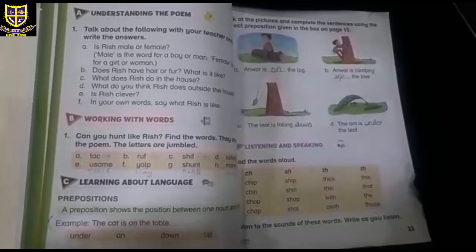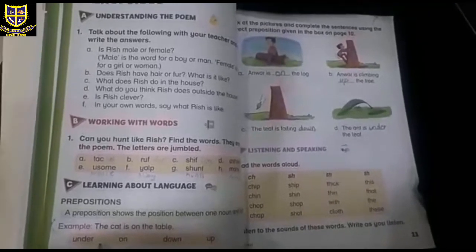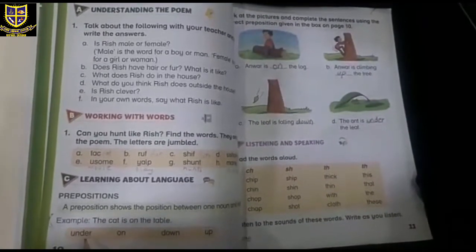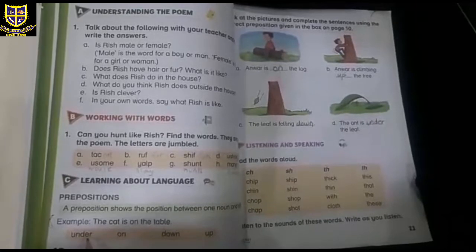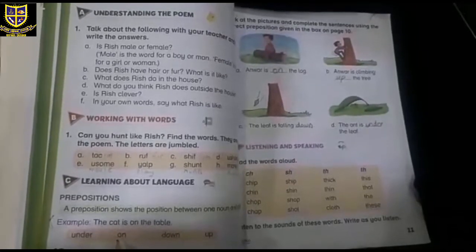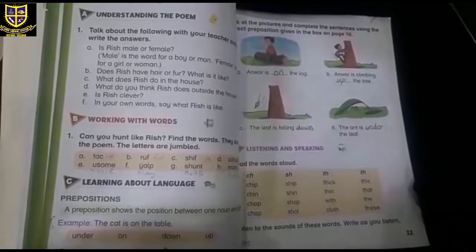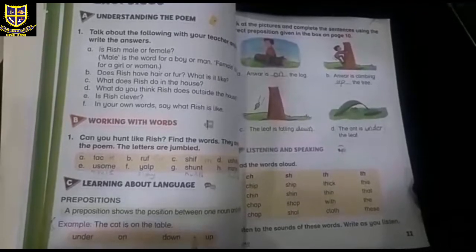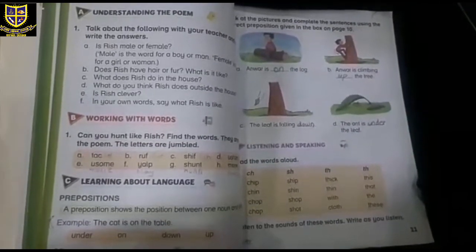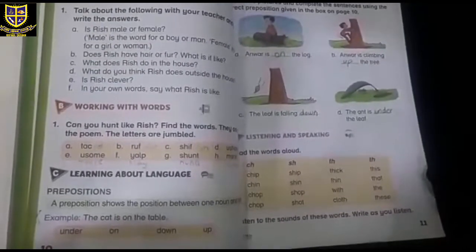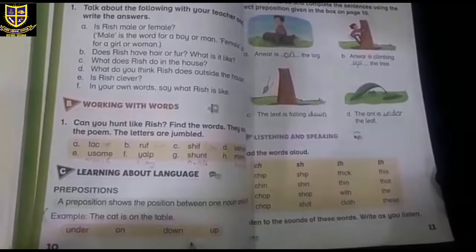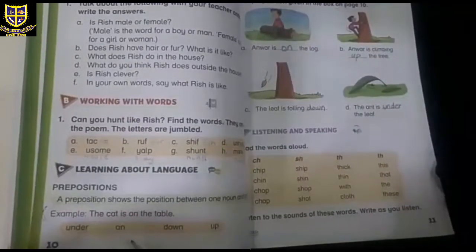We have four more prepositions. Under is also a preposition because under also tells us a position. We have a lot of prepositions: on, under, down, up. These are prepositions and you have to remember them on your fingertips. I will ask what are prepositions, and you have to remember: under, on, down, up.